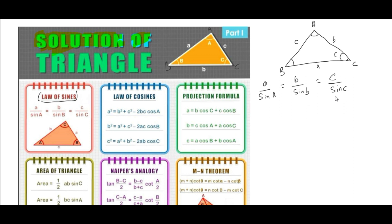If we are preparing for any other engineering exam, we don't need an explanation of this. But if we are preparing for IIT JEE, we must know how this came about. So let's prove it. We have to prove that a/sin A = b/sin B = c/sin C for triangle ABC.